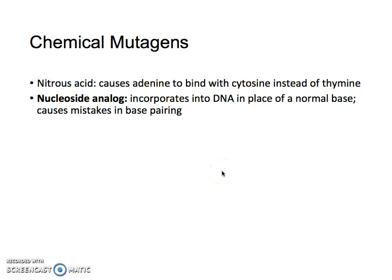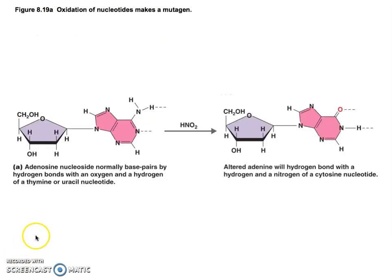Chemical mutagens don't give you mutant powers. Nitrous acid causes adenine to bind with cytosine instead of thymine. Nucleoside analogs incorporate into the DNA in place of a normal base, which can cause incorrect base pairing. One of the synthetic sugars — saccharin — is a nucleoside analog and we're going to go over it. Adenosine normally base pairs via hydrogen bonds with the oxygen and hydrogen of thymine, but altered adenine hydrogen bonds with nitrogen of cytosine instead.